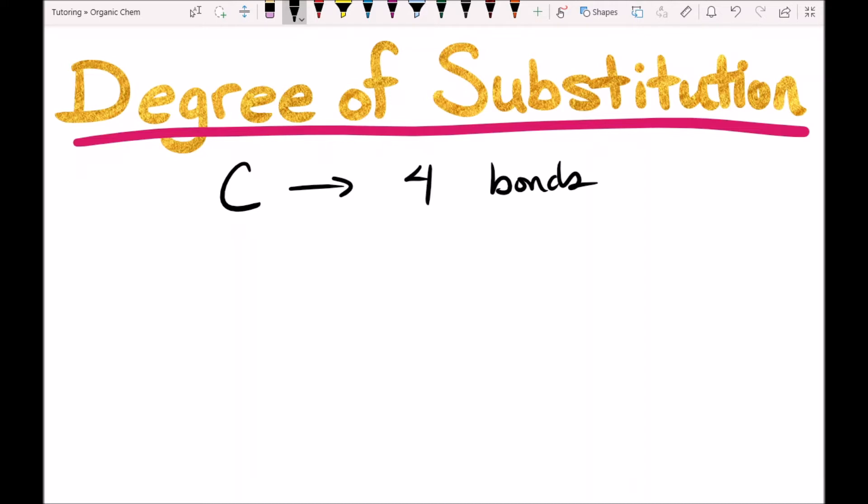So when we say degree of substitution, that's how many bonds on that carbon of interest are bonded to another carbon. And there are four classifications for carbon based on their degree of substitution.